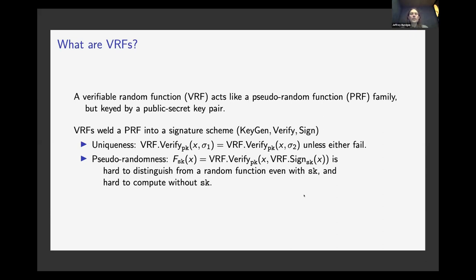These things are supposed to be functions, which means that if we have a particular public key and an input, then the output should be unique. And they should be pseudorandom, which means that if I haven't looked into the function, if I haven't looked at a particular value yet, then I don't know what it will be even with the secret key, and the thing should be hard to compute without the secret key.